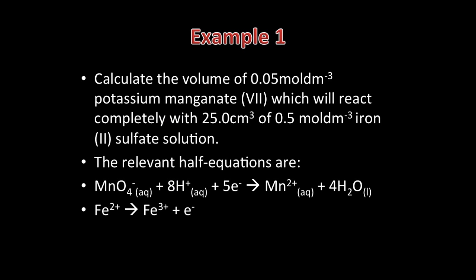A simple example to start: calculate the volume of 0.05 mol dm-3 potassium manganate 7 which will react completely with 25 cm3 of 0.5 mol dm-3 iron(II) sulphate solution. The relevant half equations are MnO4- + 8H+ + 5e- → Mn2+ + 4H2O, and Fe2+ → Fe3+. You do not actually need to learn these equations, but they come up so frequently that it is advisable to become familiar with them.